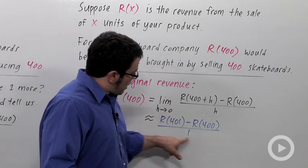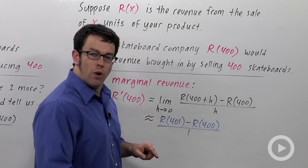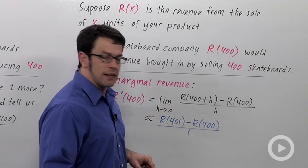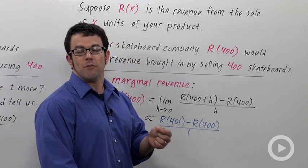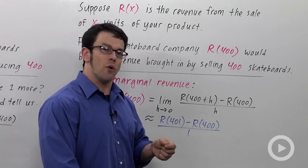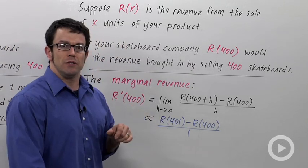And this quantity is exactly the revenue from selling 401 skateboards. This is exactly the revenue from selling 400. And the difference would be the revenue you get from selling that 401st skateboard. The revenue from selling one more. That's what the marginal revenue tells us.